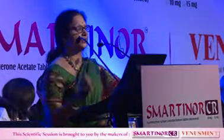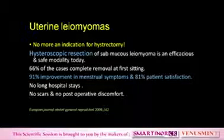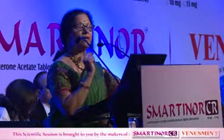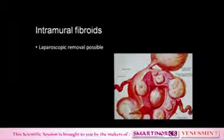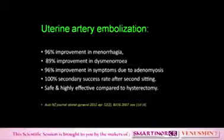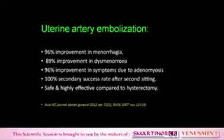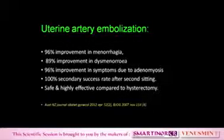Fibroids are no longer an indication for hysterectomy. You can do hysteroscopic resection of submucous myomas — it is shown that in 66% of cases complete removal is possible whatever the size, with 91% improvement in menstrual symptoms and 81% patient satisfaction. No long stay, no scar. For intramural fibroids, excellent surgeons do laparoscopic removal of all myomas and the bleeding also reduces. If that is not possible and the patient is not physically fit, you have excellent treatment like uterine artery embolization — shown to give 96% improvement in menorrhagia, 89% improvement in dysmenorrhea, and 100% secondary success rate after a second sitting. It is safe and highly effective compared to hysterectomy. Why hysterectomy? No hysterectomy.